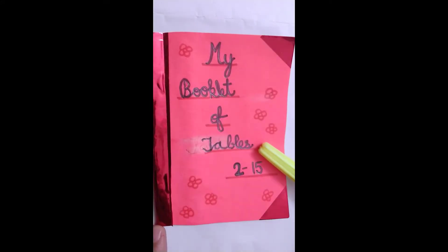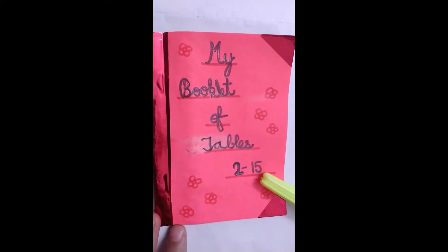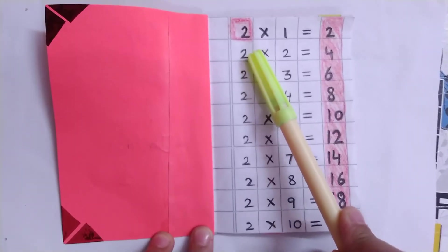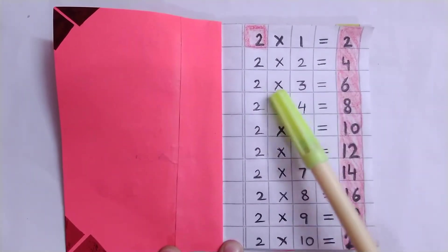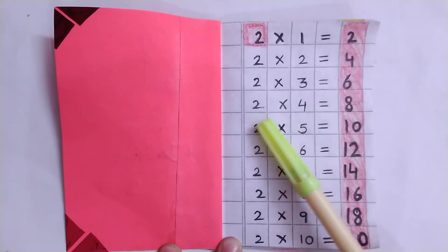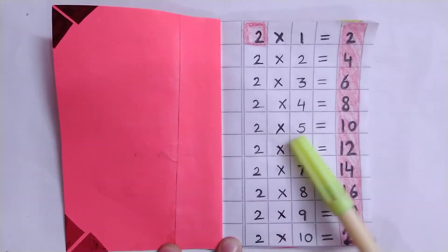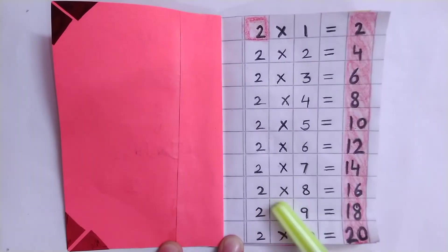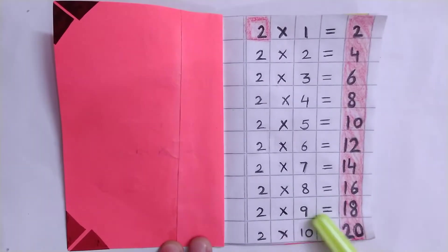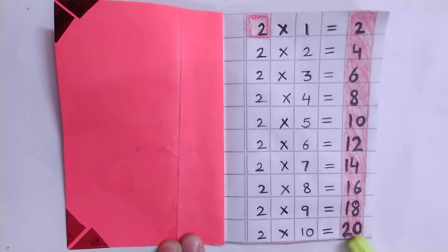My booklet of tables 2 to 15. Table of 2: 2×1=2, 2×2=4, 2×3=6, 2×4=8, 2×5=10, 2×6=12, 2×7=14, 2×8=16, 2×9=18, 2×10=20.